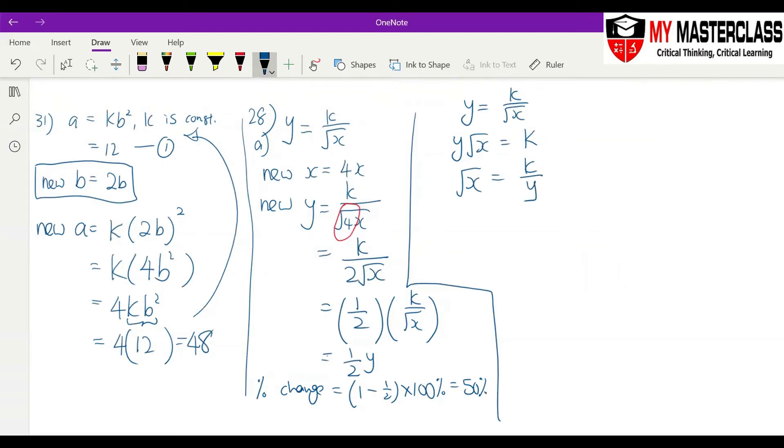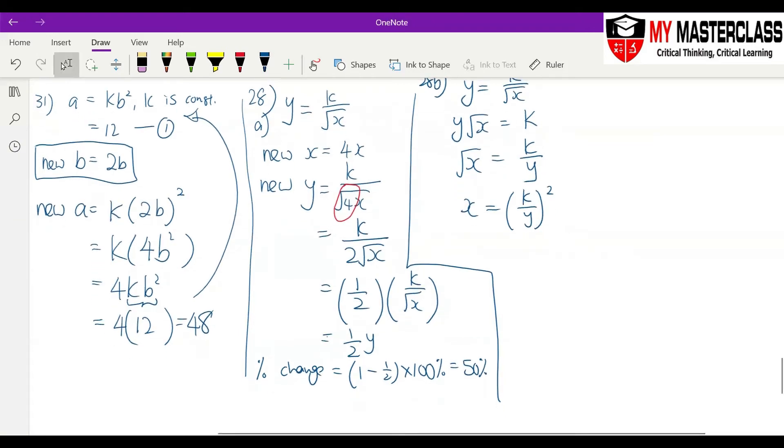So x is equal to k over y bracket square, which is equal to k over y square. And they say that this is equal to 32, this is your equation 1.